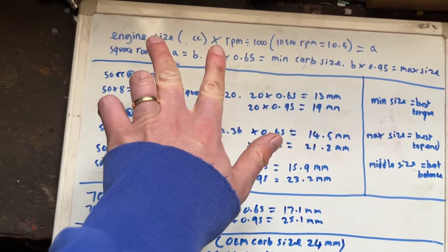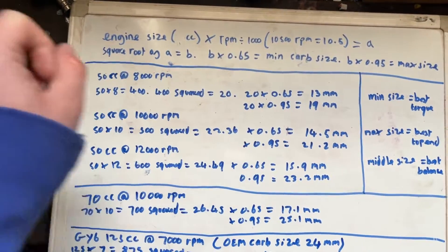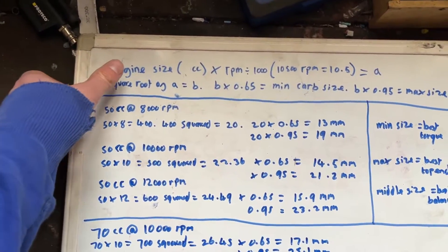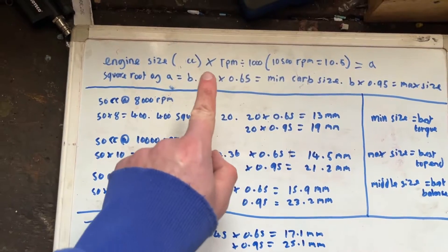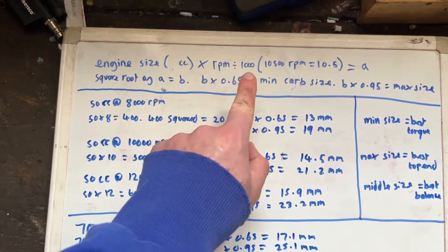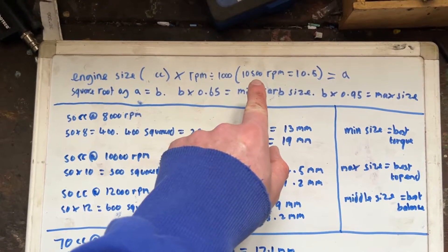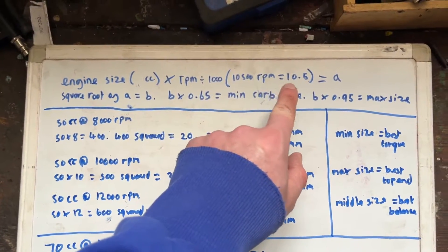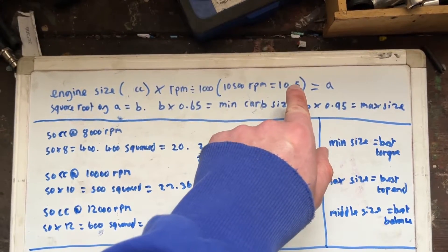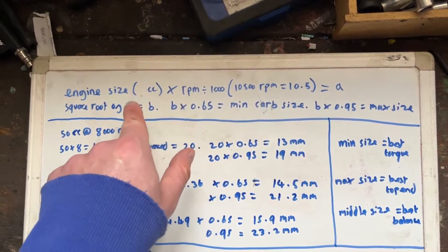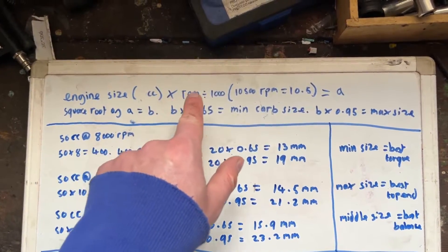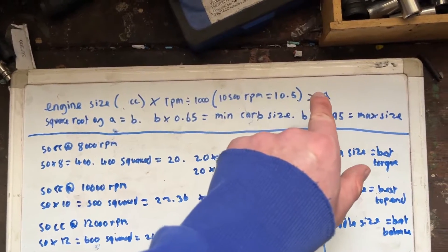Okay so we've got those two things, we've got engine size and RPM. So this calculation, how it works: we take our engine size in cc's, we times it by the RPM divided by 1000. So what I mean by that, if your maximum RPM of your engine is 10,500, then you divide that by 1000 so you end up with 10.5. So you'll do, for example, 50 times 10.5 will give you A.